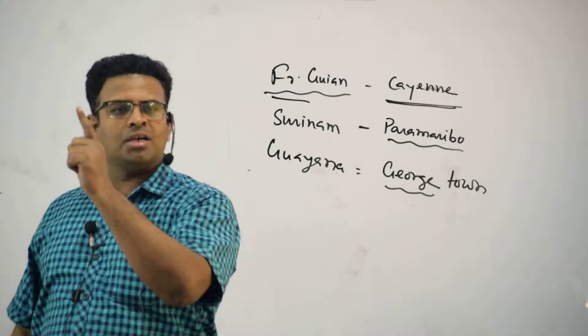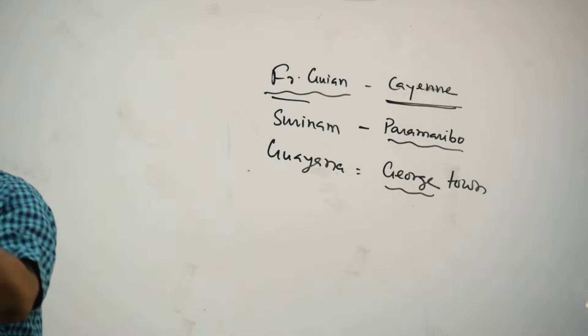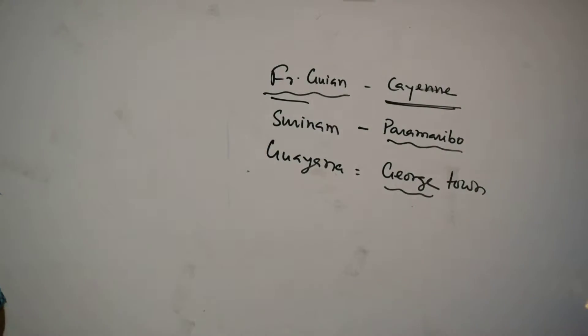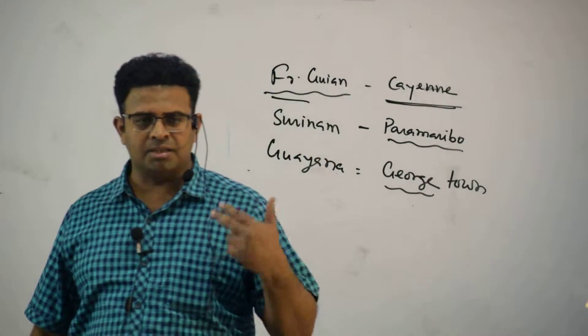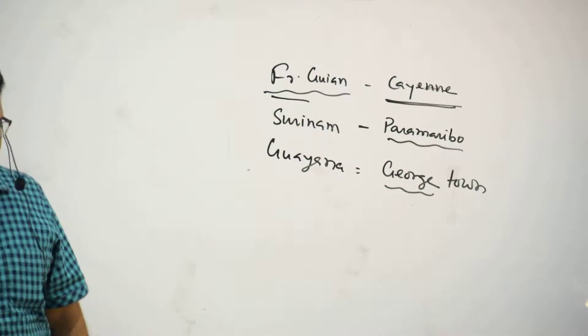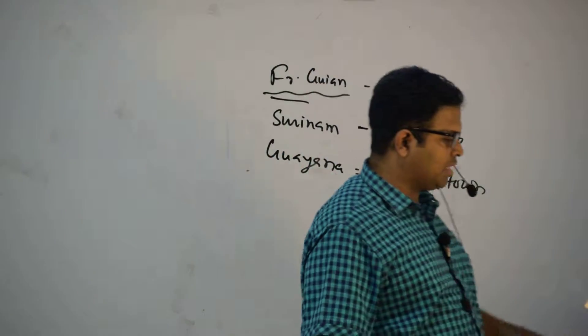French Guiana, Cayenne. Suriname? Hearing Suri's name, para Maribo. Guiana. And then another one I said, yes tell me. Guiana and its capital is Georgetown, Georgetown. Another one I said that?